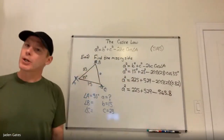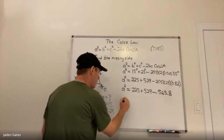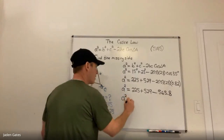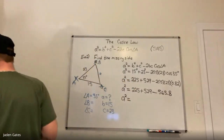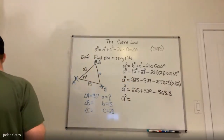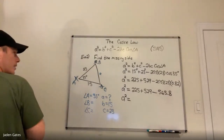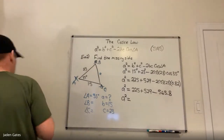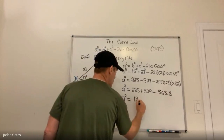Following BEDMAS, I can do my adding and subtracting. So A squared equals — putting those numbers together — 225 plus 529 minus 565.8, and I get 188.2.